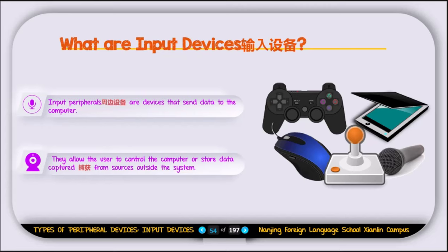These devices allow the user to control the computer or store data captured from sources outside of the system. For example, a microphone captures sound and sends it to the computer — it captures data outside the computer and sends it in. The computer can then process that data. This covers the definition of peripheral devices and input peripheral devices specifically.